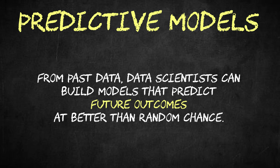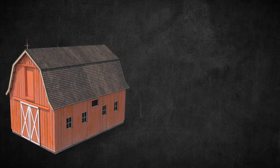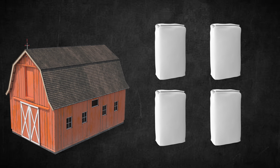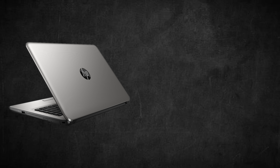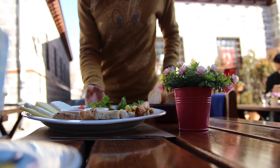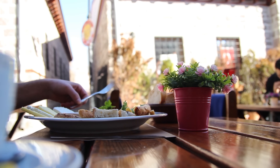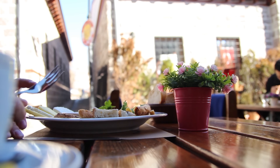After data analysis, we start to get into what most people consider the sexy stuff: building predictive models. From past data, data scientists can often build models that predict future outcomes at better than random chance. This allows businesses to hopefully make better decisions about how they allocate their resources. For example, if we owned a farm and wanted to build a model to predict how much fertilizer we'd need to purchase each month, it could save us a lot of money if we predict this amount very accurately. Another example would be if we're looking to franchise a new restaurant — we could build a model that predicts the return on investment based on geography, traffic patterns, and demographics of the new location.